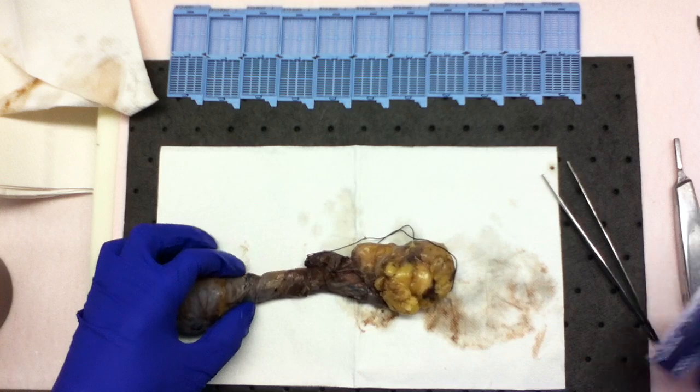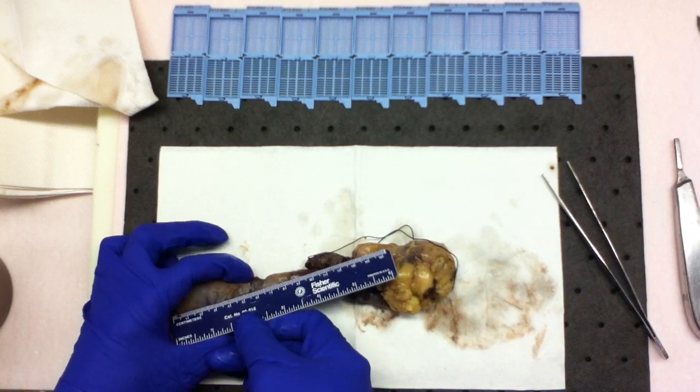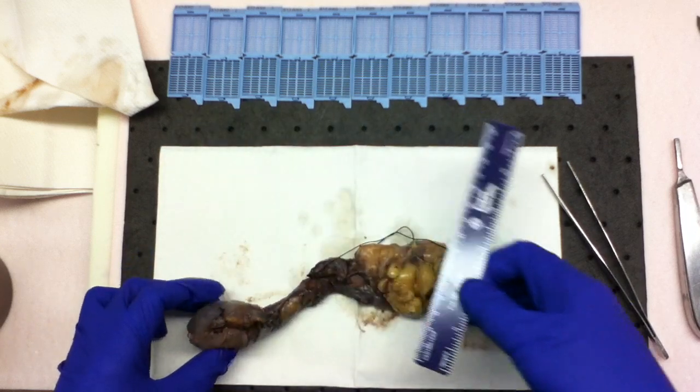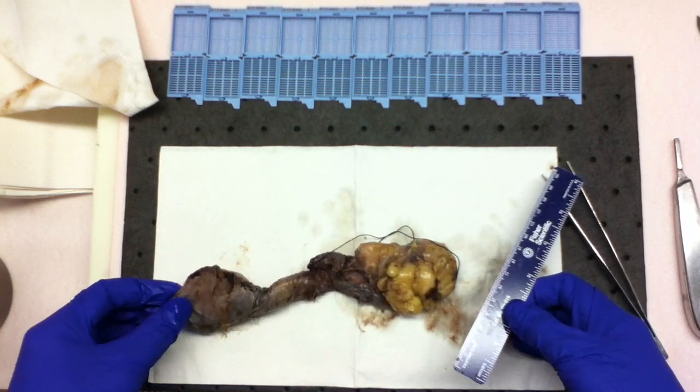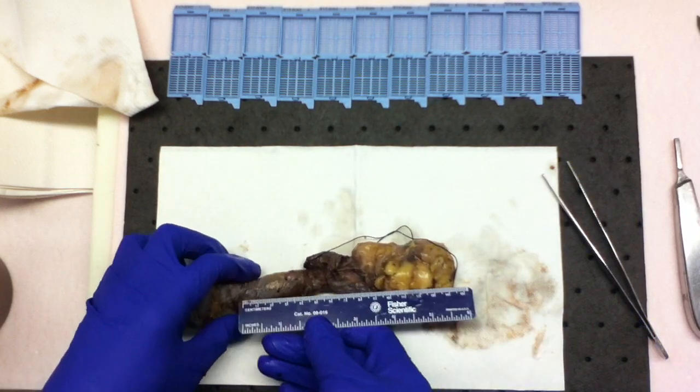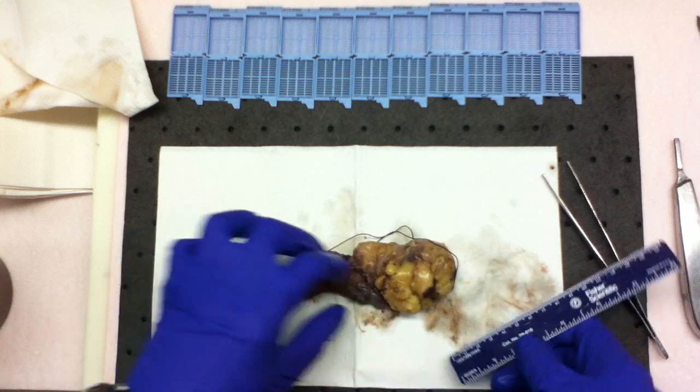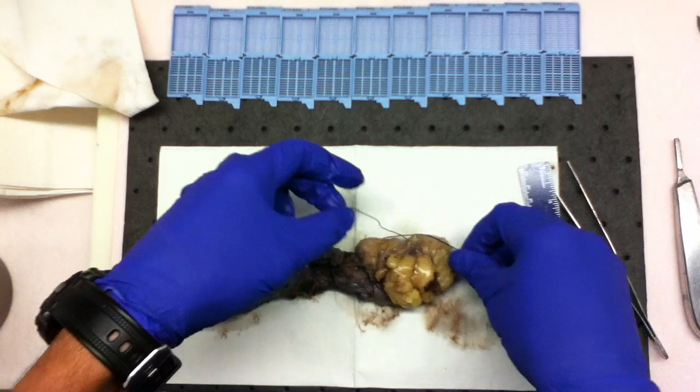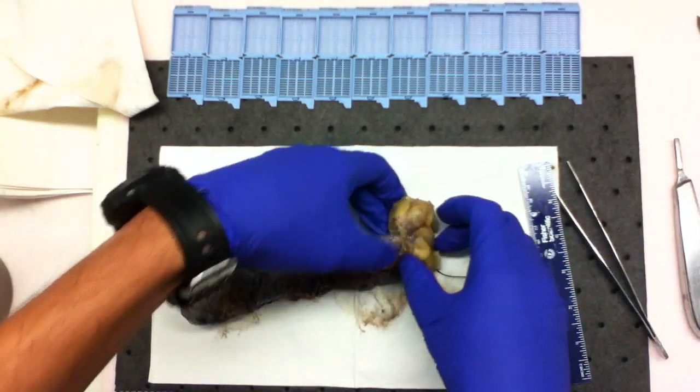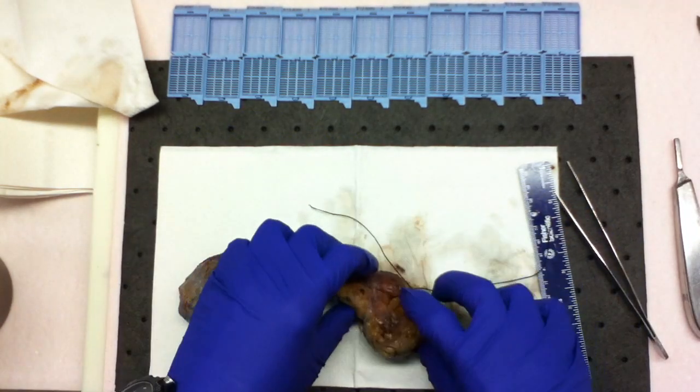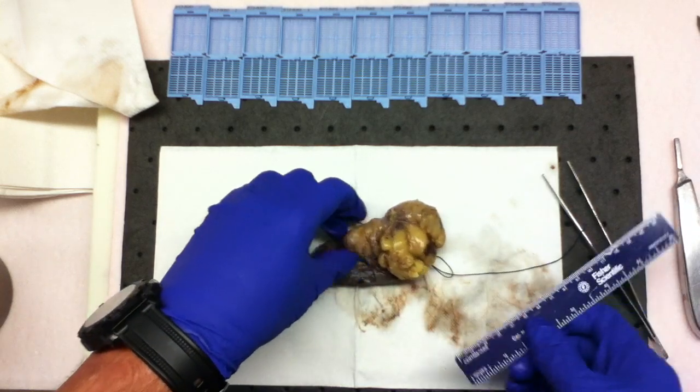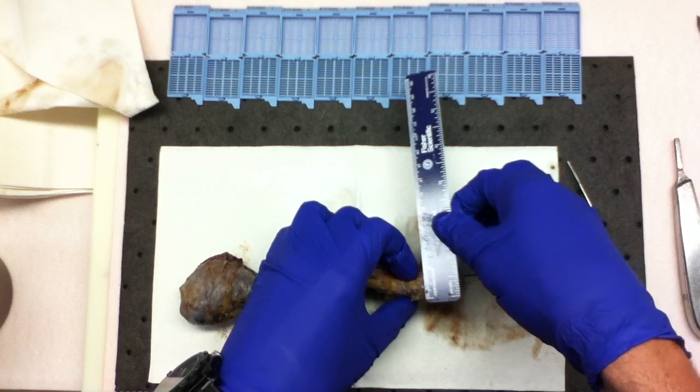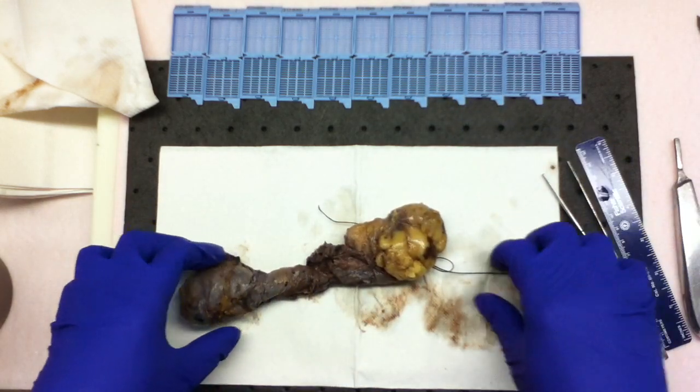It consists of a 172 gram, 5.6 by 4.3 by 3.4 cm testicle with 15.2 cm of attached spermatic cord with abundant amounts of attached fat grossly consistent with an inguinal lipoma. The inguinal lipoma measures 6.8 by 5.2 by 2.4 cm.